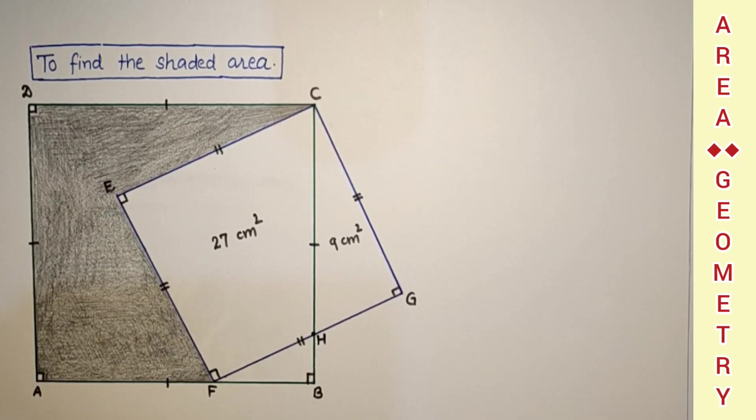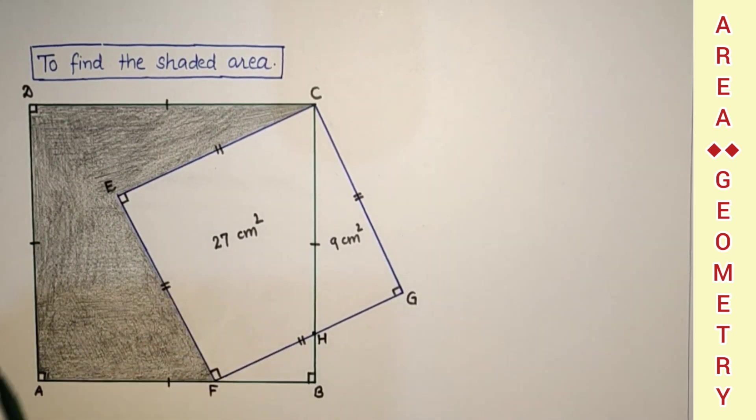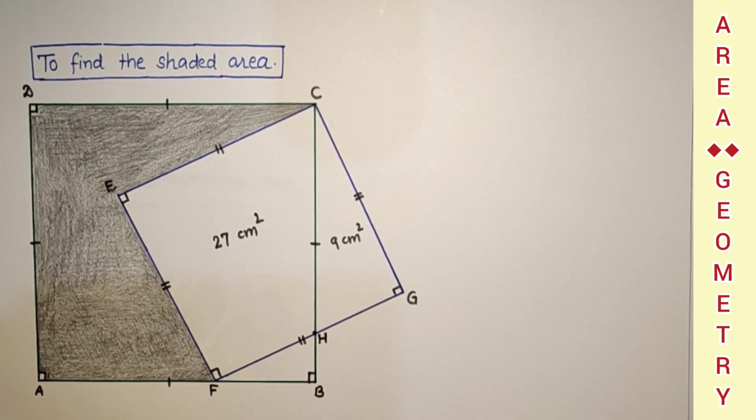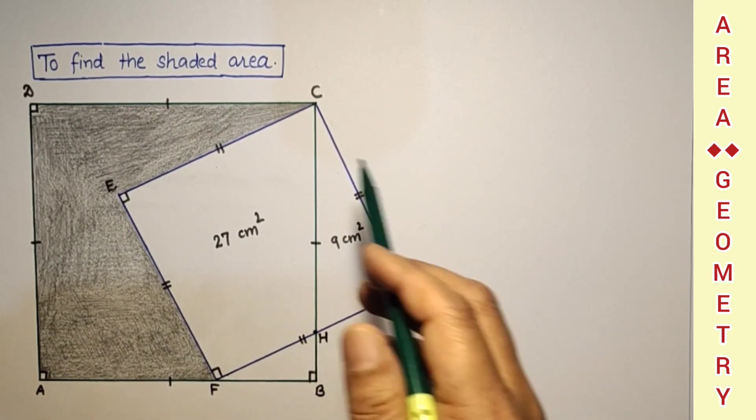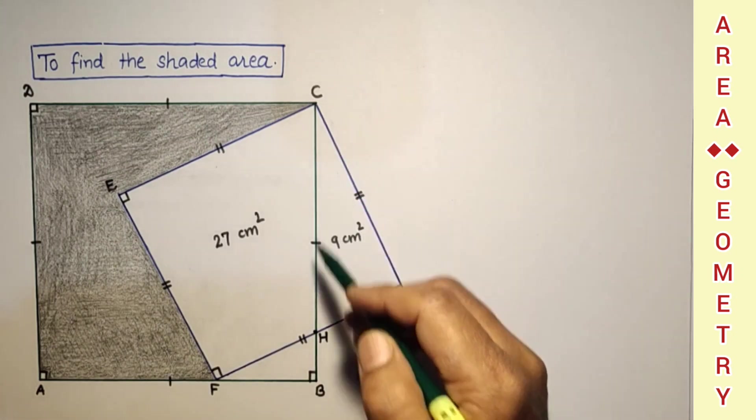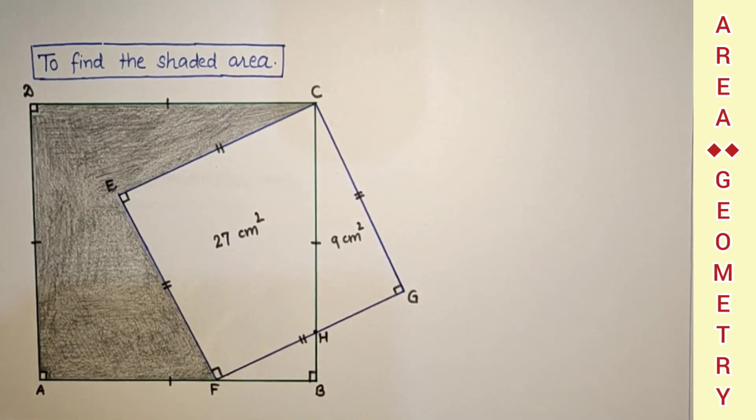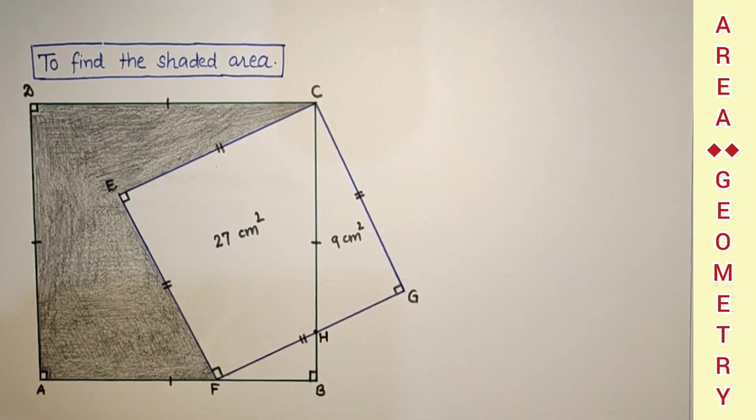Hello everyone and welcome back to this channel. In today's question we are going to discuss this shaded area. We are given a square ABCD, another square EFGC is given according to the shown figure. This part's area is given as 9 cm square while this area only is 27 cm square. We have to find this shaded portion area.